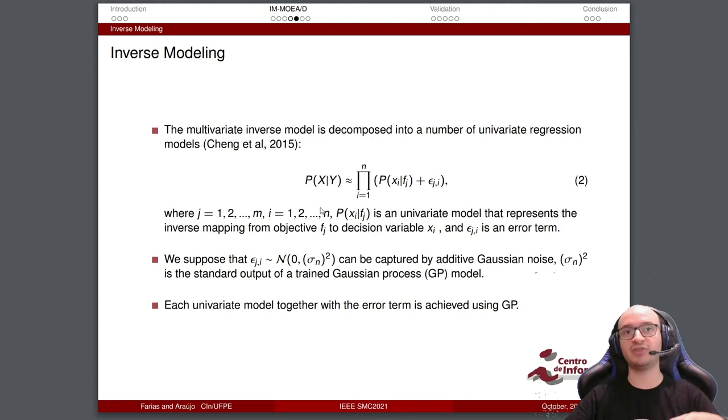The probability p is a univariate model that represents the inverse mapping from objective f_j to the decision variable x_i. And epsilon is an error term. We suppose that epsilon is a normal distribution and can be captured by additive Gaussian noise. It is the standard output of a trained Gaussian process GP model. Each univariate model together with the error term is achieved using the GP. Now we have the solutions, the parents with the offsprings.